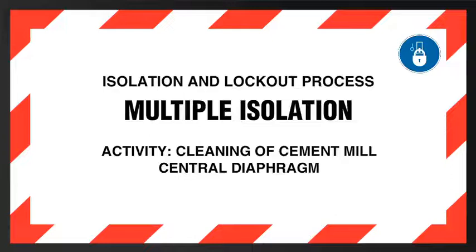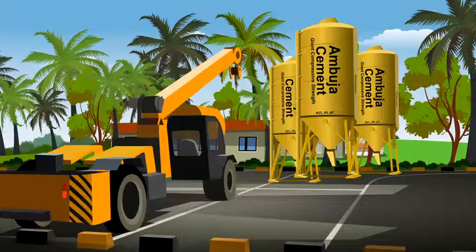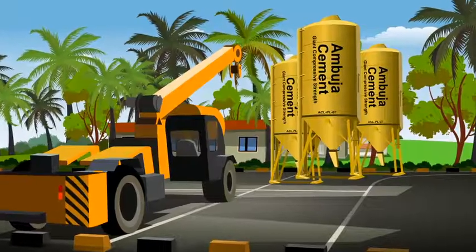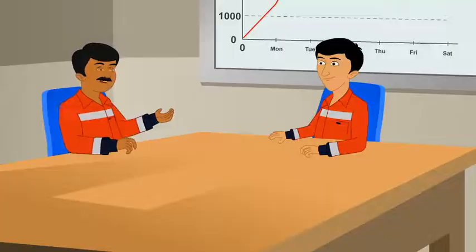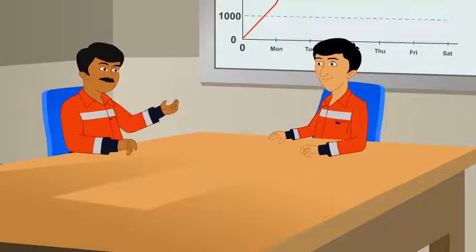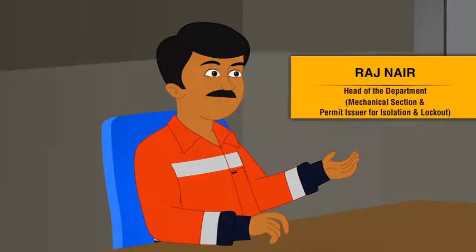Isolation and lockout process — multiple isolation activity: cleaning of cement mill central diaphragm. It is 11 a.m. at Ambuja's grinding unit, where two employees are discussing an issue.